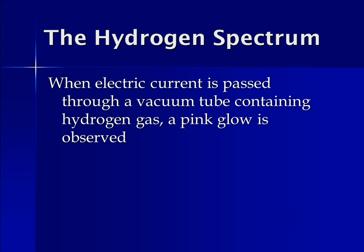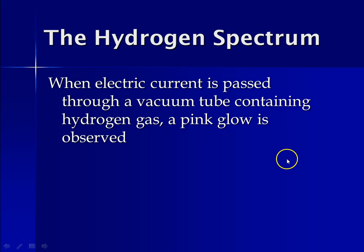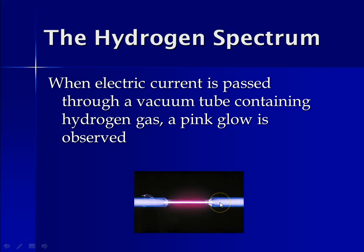Around this same time, people were doing experiments similar to Thomson's experiment with his cathode ray tube, where they had elemental gases in tubes and passed current through them. It turns out that when electric current is passed through a vacuum tube containing hydrogen gas, a pink glow is observed.